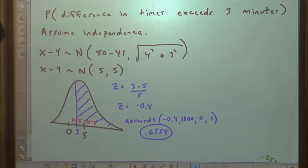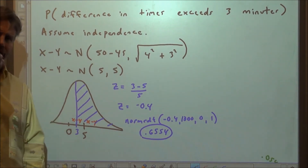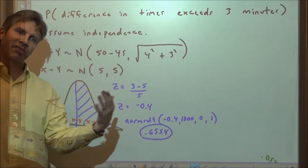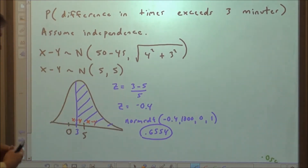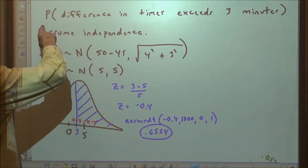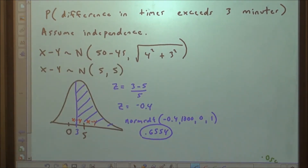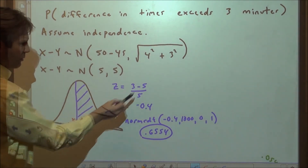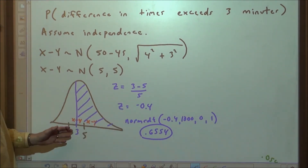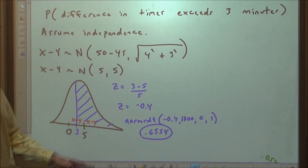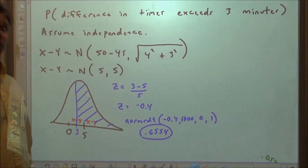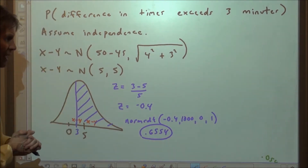This joint distribution for the difference of the times contains every possible difference. Zero on this distribution makes sense: it would mean the mast time and the seat time were exactly equal that one selection. To find the probability the difference exceeds 3 minutes, we locate 3 on the distribution and find the area under the normal curve above 3. The z-score would be negative 0.4 — meaning 0.4 standard deviations left of the mean.